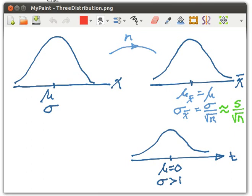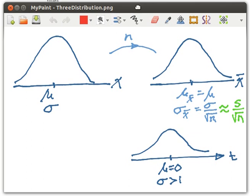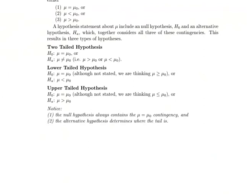In this video we're going to look at a one-tailed hypothesis test about the mean of a population. Remember that there were three different kinds of hypothesis tests about the mean of a population. One is a two-tailed test, one is a lower-tailed test where the alternative hypothesis is saying that the mean is less than some particular value. We're going to look at the upper-tailed test this time.